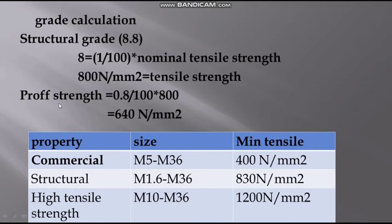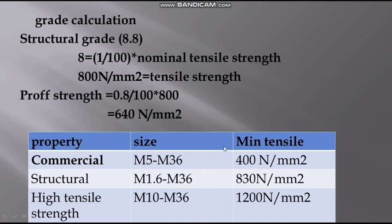If you have any doubt about diameter, you can refer to this table. For commercial bolts, M5 diameter — ranging from 5 mm to 36 mm — the minimum tensile strength is 400 N/mm². For structural bolts, M1.6 up to M36, the minimum tensile strength is 830 N/mm². For high tensile bolts, minimum 10 mm up to M36, the strength is 1200 N/mm².